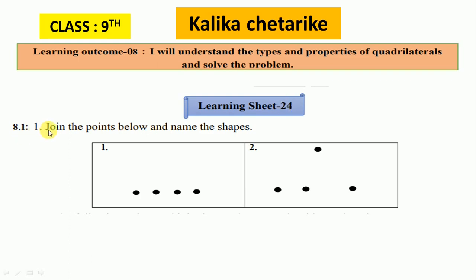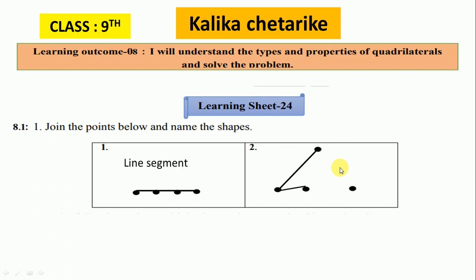At point 1, join the points below and name the shape. We join this point. The shape is line segment. Here, we join the points. It is a four-sided figure, so we write here quadrilateral.